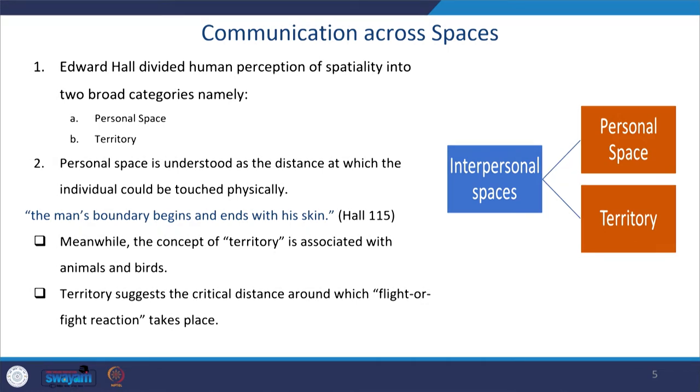Territory suggests the critical distance around which a flight-or-fight reaction takes place. In a crowded place you don't get the space you require and want to get away. Every human being wants a sort of territory around them. In the corporate world, space allocations for everyone denote a significance of the person and how much importance they have in the organization. Personal space is understood as the distance at which an individual could be physically touched.